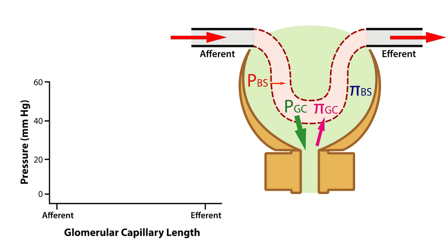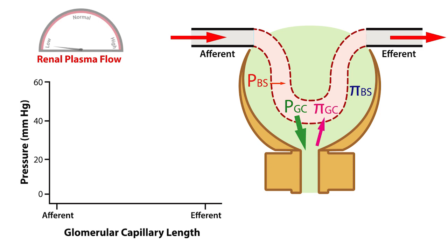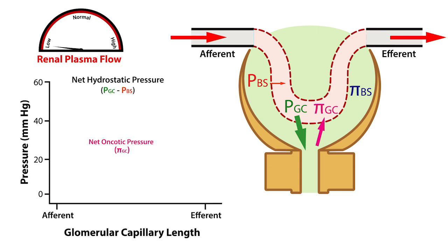With this in mind, let's talk about an important variable that significantly affects the net ultrafiltration pressure, and that is renal plasma flow. We'll use a gauge to illustrate changes in renal plasma flow from low to high, while simultaneously illustrating how net hydrostatic pressure, net oncotic pressure, and net ultrafiltration pressure are affected along the length of the glomerular capillaries.